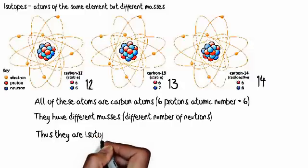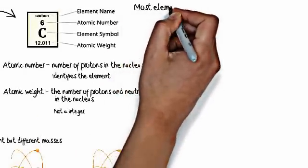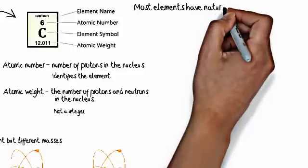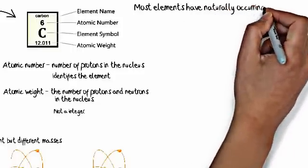Thus, they are isotopes—elements with the same atomic number but different masses. That's what an isotope is. Most elements have naturally occurring isotopes.